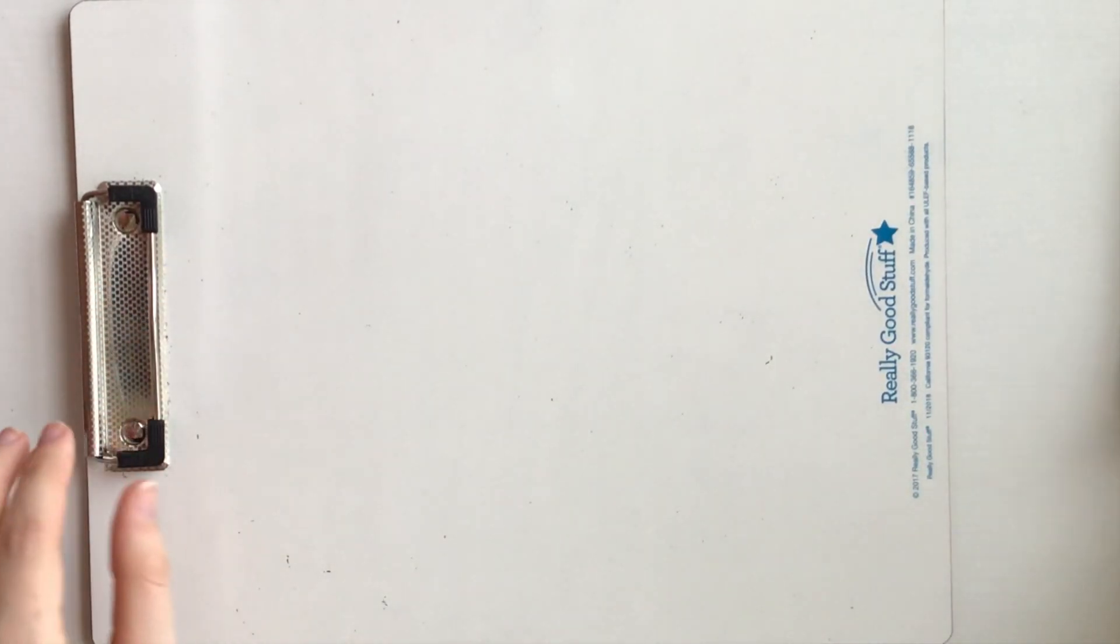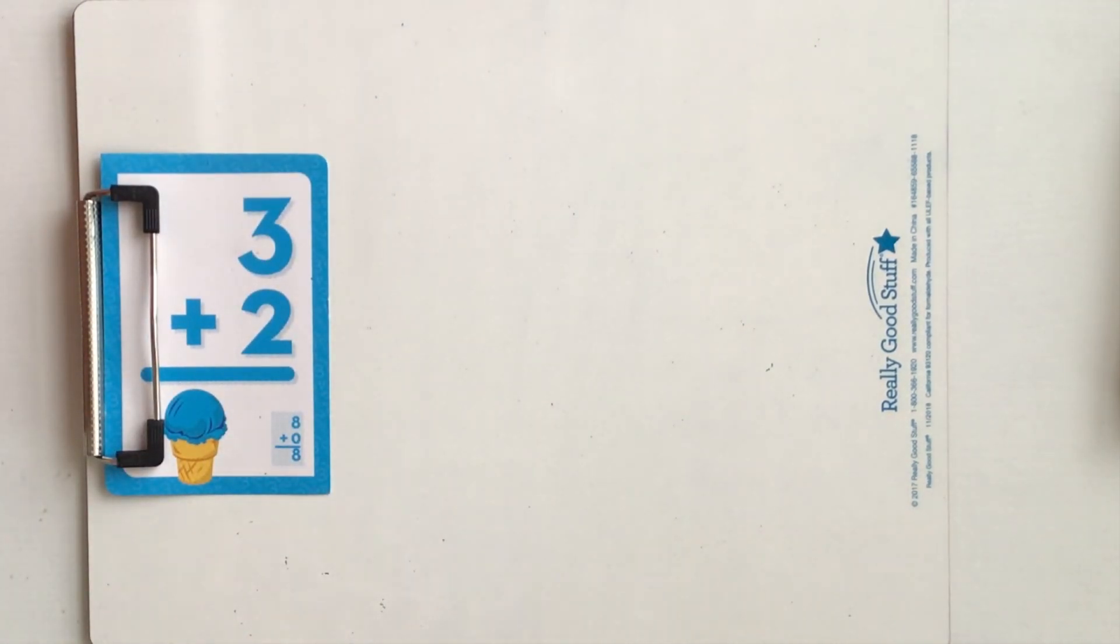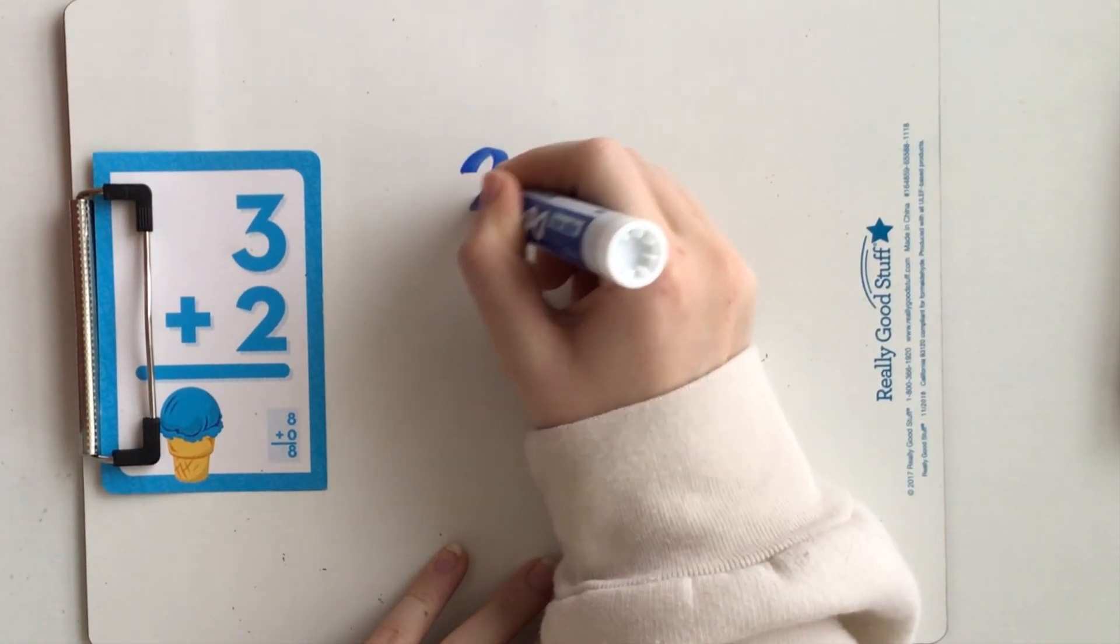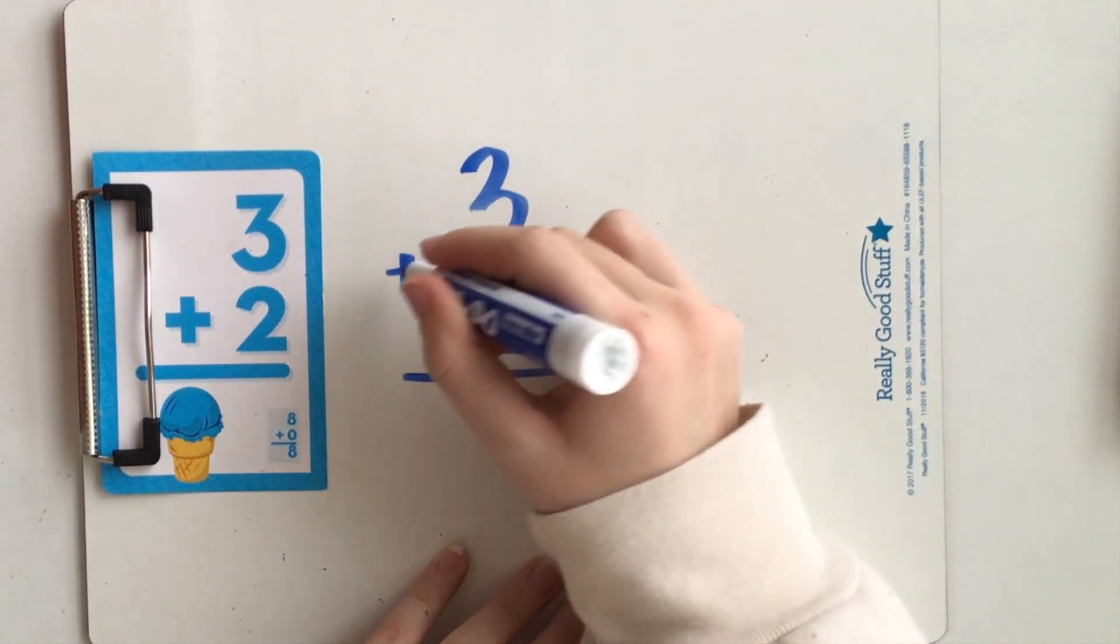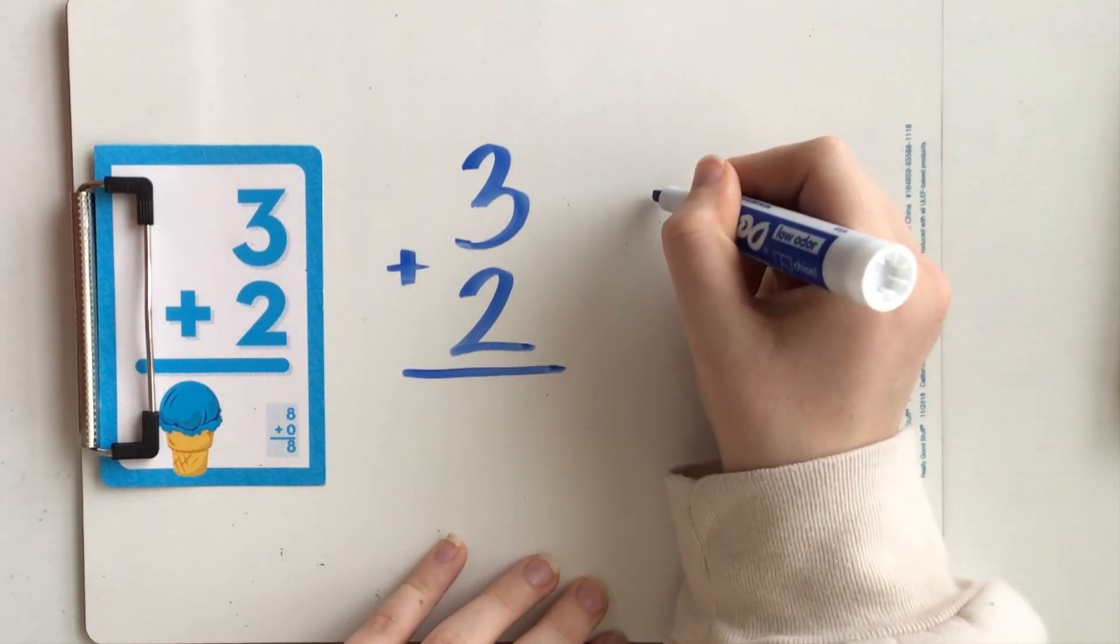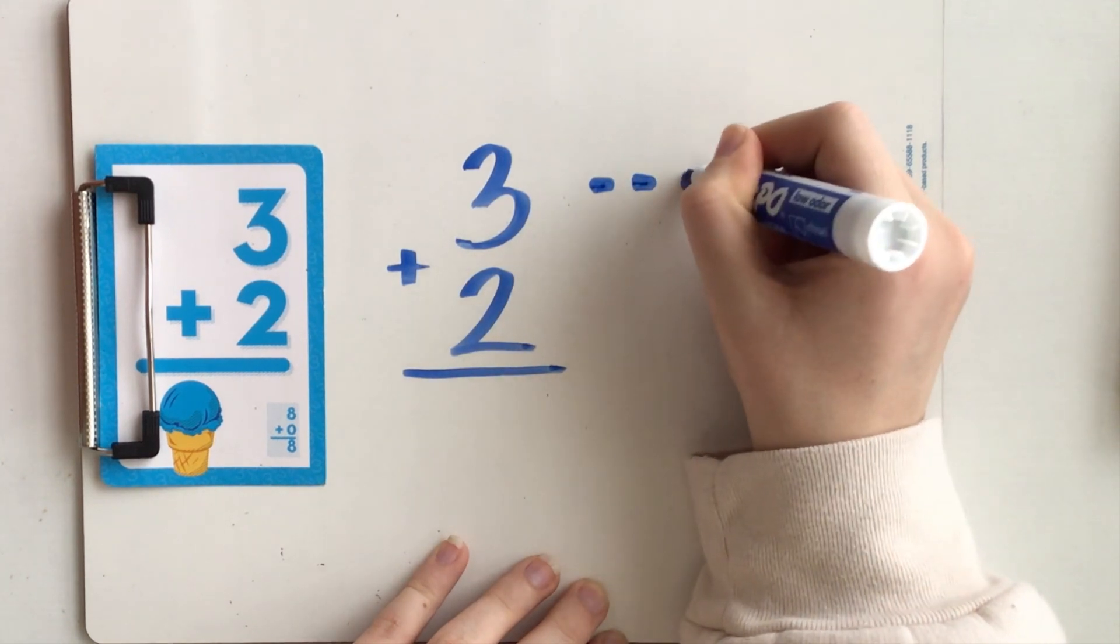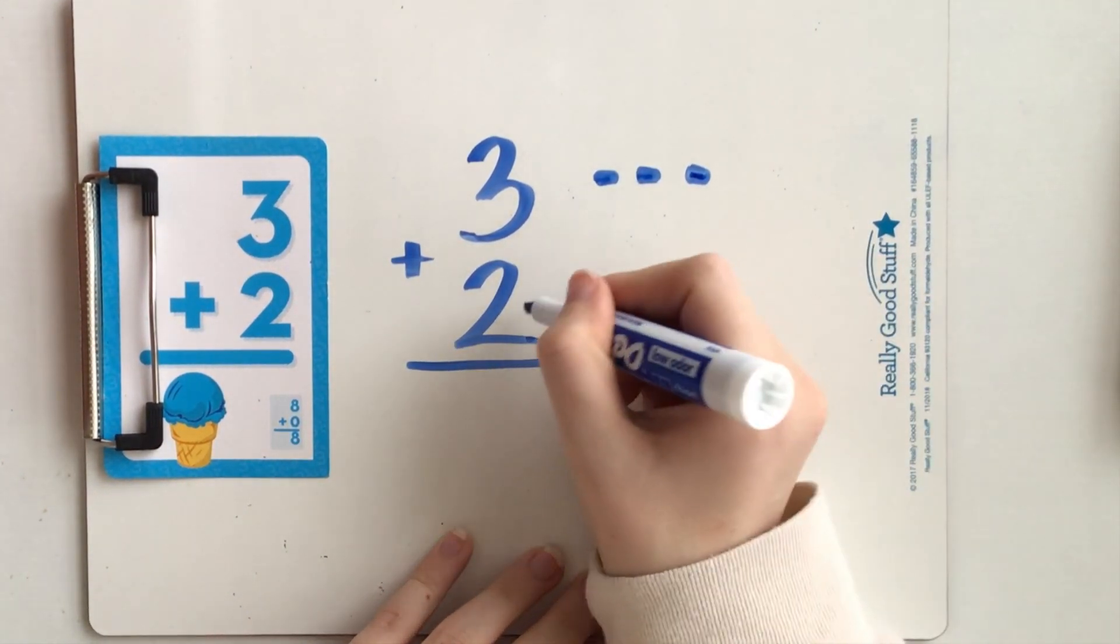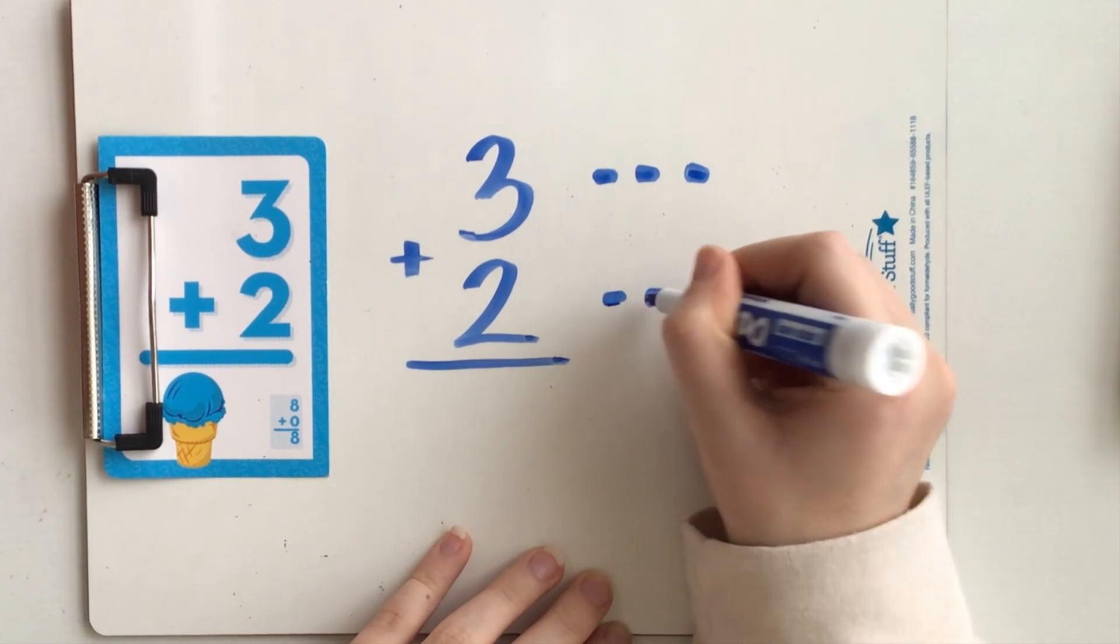Our next problem is three plus two. Rewrite. Three plus two equals how many dots will I write here? One, two, three. How many dots will I write now? Two. One, two.